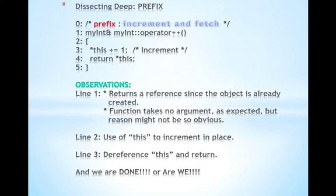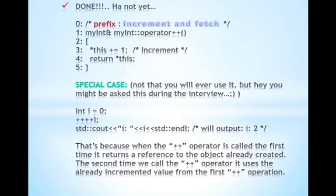Function takes no argument as expected because you're not doing anything special, but there is another good reason why it doesn't have any argument. If you look at postfix we'll cover that next, you'll notice that it does have an argument passing even though you'll never use it. What special case are you talking about here? Talking about the case where you had +++i and you're going to see why it works.